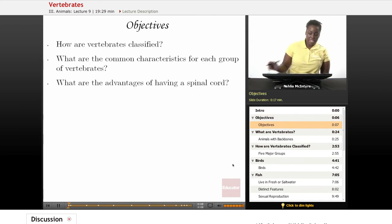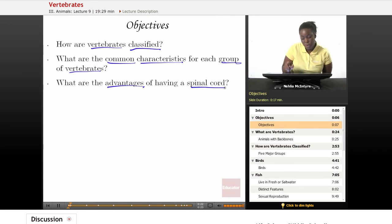Our objectives for this lesson will be: how are vertebrates classified? What are the common characteristics for each group of vertebrates? And what are the advantages of having a spinal cord?